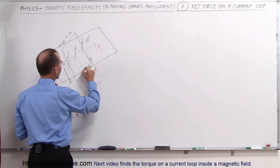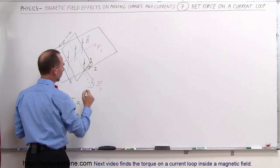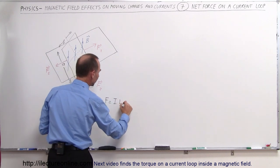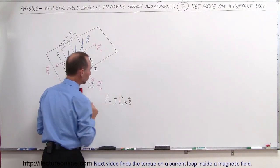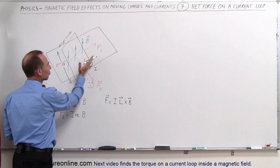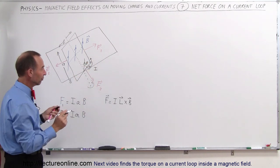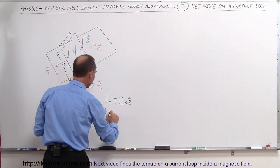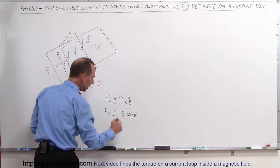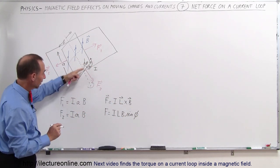Imagine we have the current going in this direction and the B field going straight up. We can say that the force is equal to I times the length L cross B — that would be a vector quantity. Notice the angle between the direction of the current and the direction of the B field at this angle, which let's call phi. Therefore, the magnitude of that force would be F = I times L times B times the sine of phi.